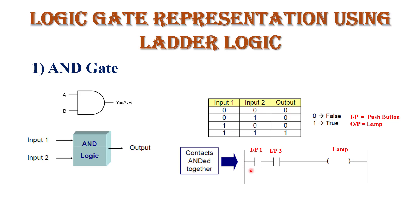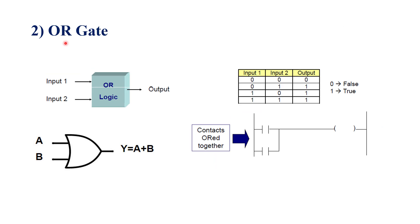Here we represent the AND logic gate using ladder logic diagram. The two vertical lines represent the power supply, and the horizontal line is the rung. For an AND gate, we connect two inputs — input one and input two — in series, and the output is also connected in series on the right-hand side. For input we use push buttons and for output we use a lamp. When both inputs are turned on, the output gets energized; if any one input is off, the output is de-energized.